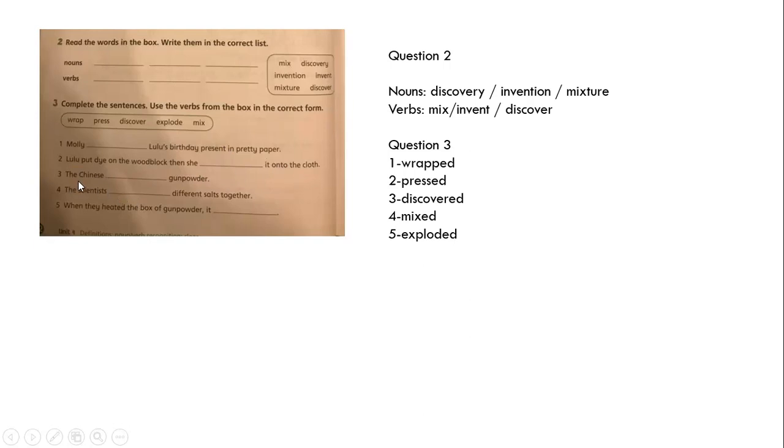The Chinese discovered gunpowder. The scientists mixed different salts together. When they heated the box of gunpowder it exploded. So number one, wrapped. Number two, pressed. Three, discovered. Four, mixed. Five, exploded.